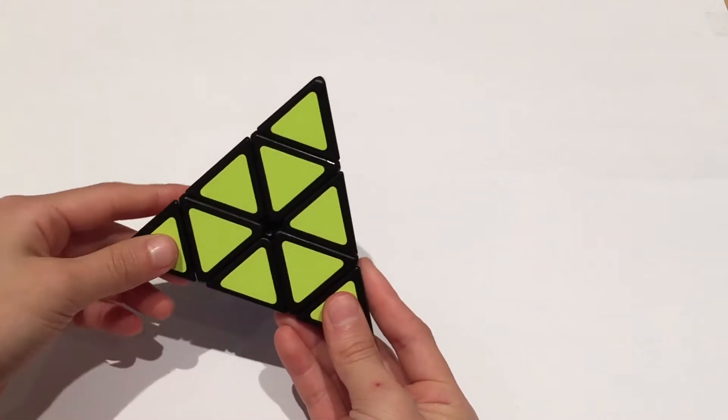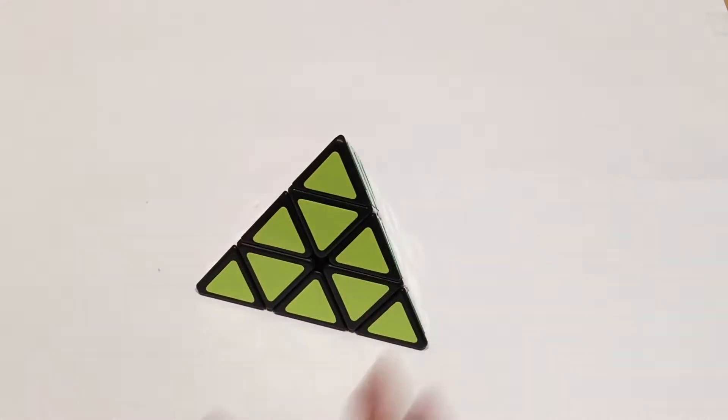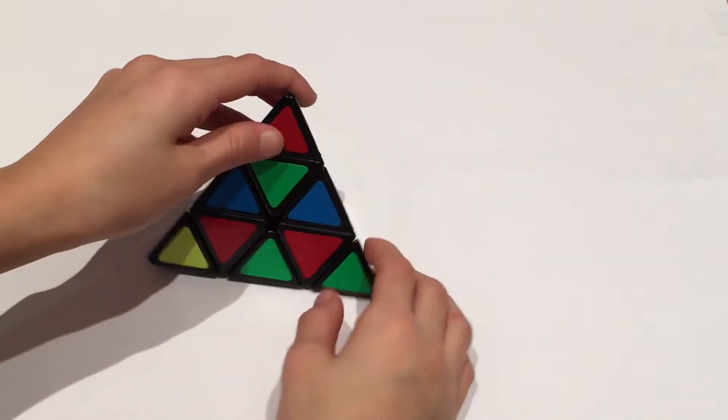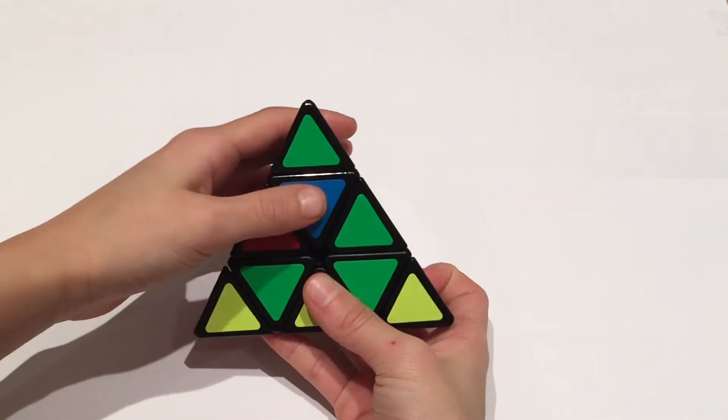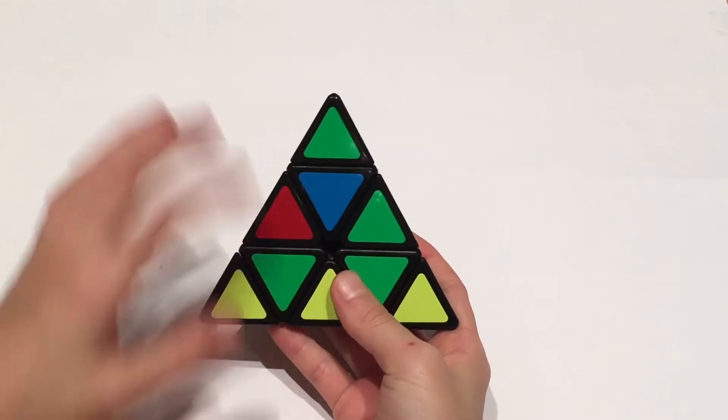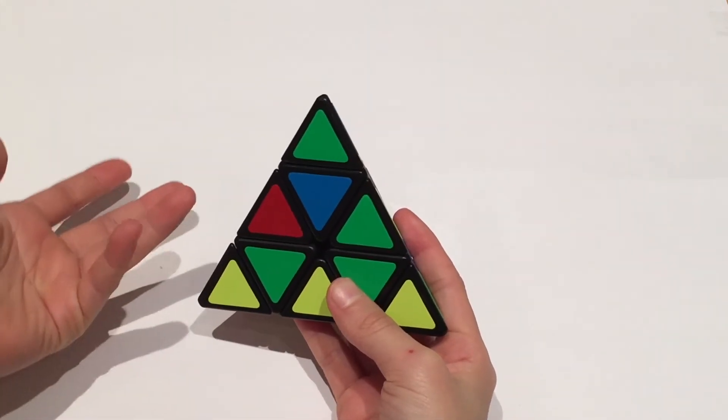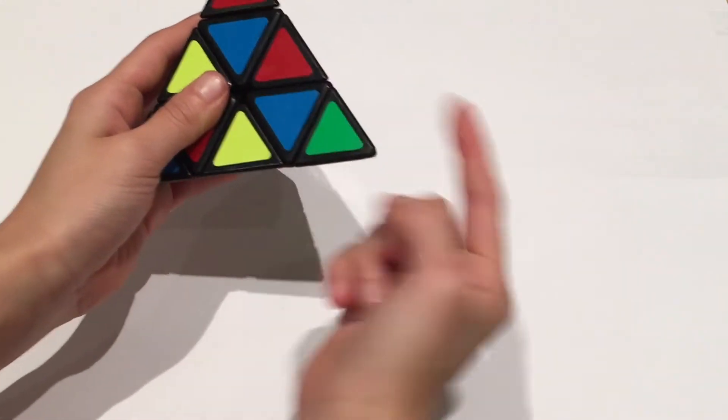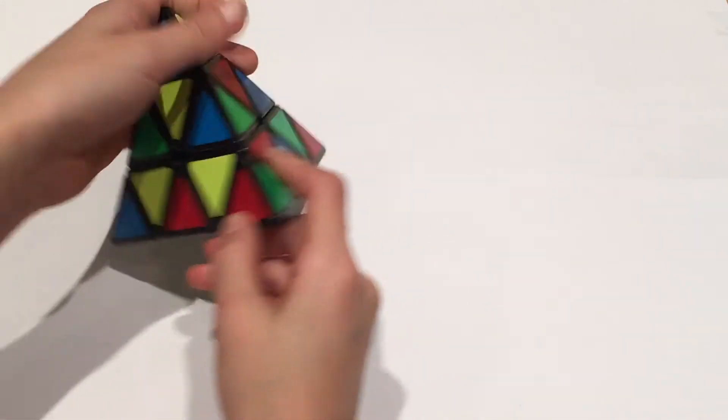So now you can start by scrambling up your Pyraminx. Once your Pyraminx is scrambled we can get started. So you want to find all of the centers. Remember these are called centers, with a color. And that color will be the color you want to make one layer out of. And one layer by the way is this.